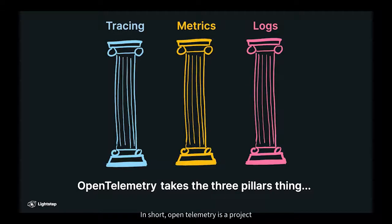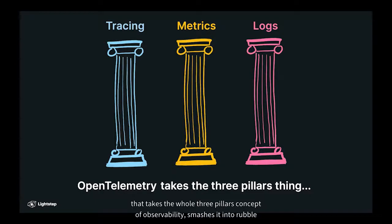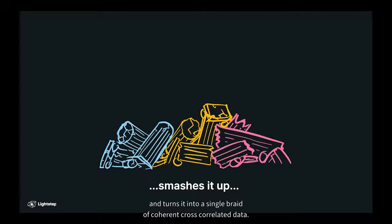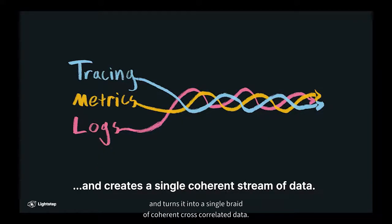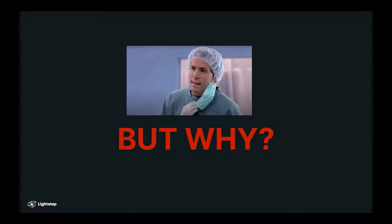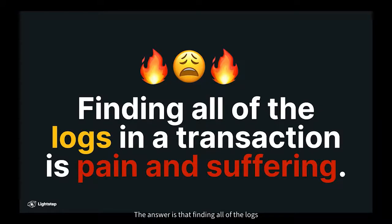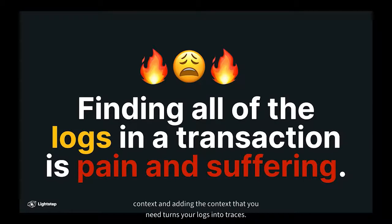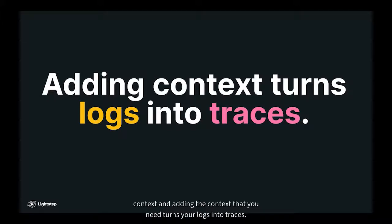In short, OpenTelemetry is a project that takes the whole three pillars concept of observability, smashes it into rubble, and turns it into a single braid of coherent cross-correlated data. But why would that actually be helpful if I already have logs? The answer is that finding all the logs in a transaction is a horrible, horrible experience because you lack context, and adding the context that you need turns your logs into traces.